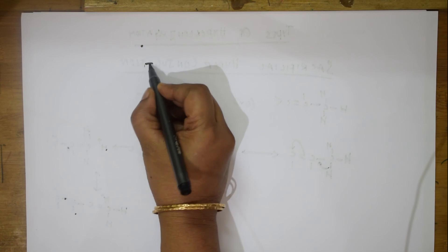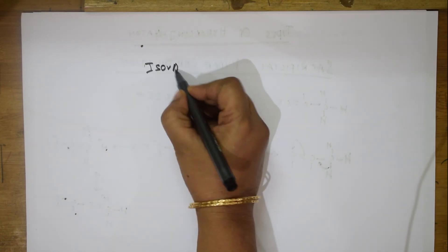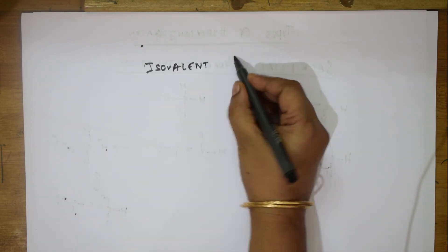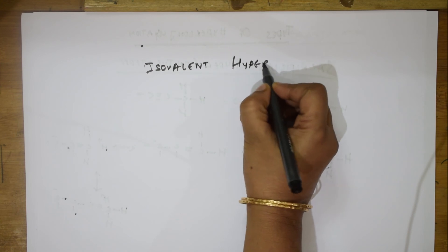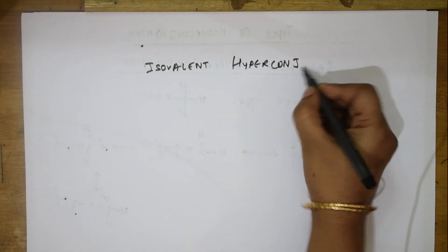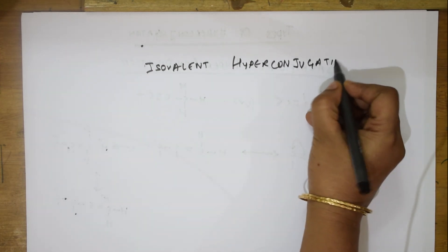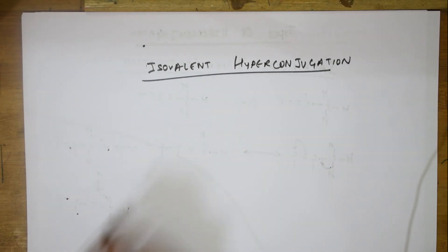What is that? The next type of hyperconjugation is isovalent hyperconjugation, isovalent hyperconjugation. An isovalent hyperconjugation, it involves no sacrifice of bonds. Remember that. Let me take an example.